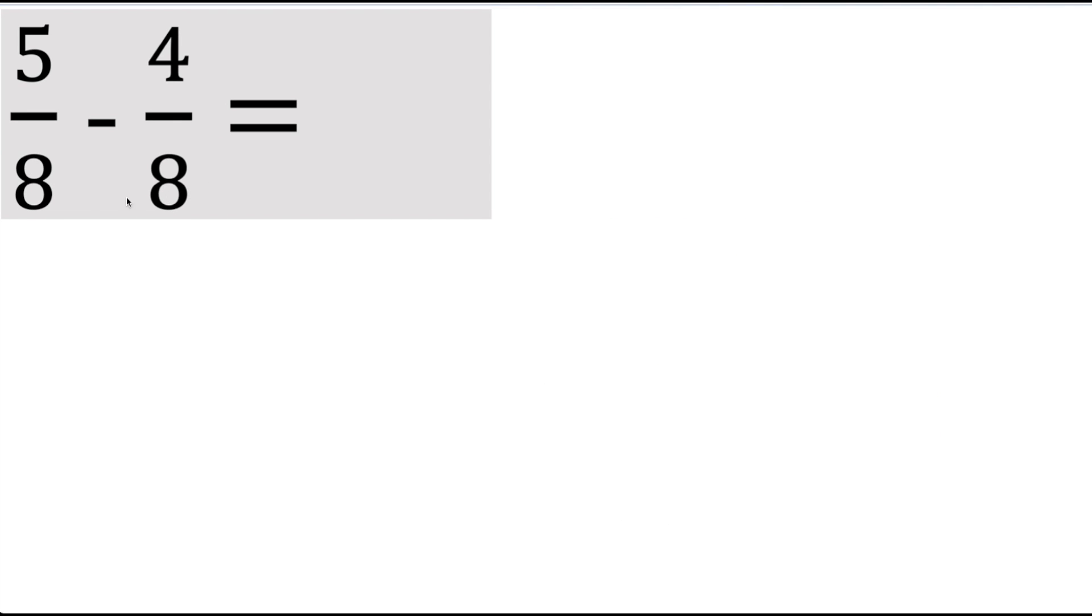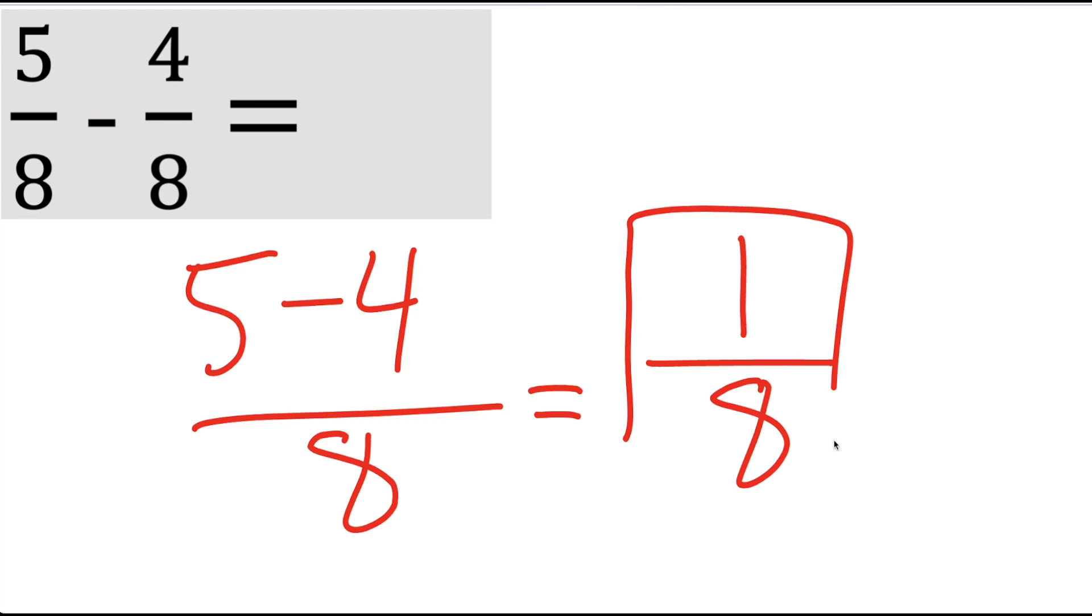And our final problem, again, the denominators are both the same. Because the denominators are the same, we get to just subtract the numerators. Because here, there's a subtraction sign. So 5 minus 4, we can write this down, 5 minus 4 divided by 8. And we know 5 minus 4 is 1, so 1 divided by 8 is the final answer. And that's all we need to do for these types of problems.